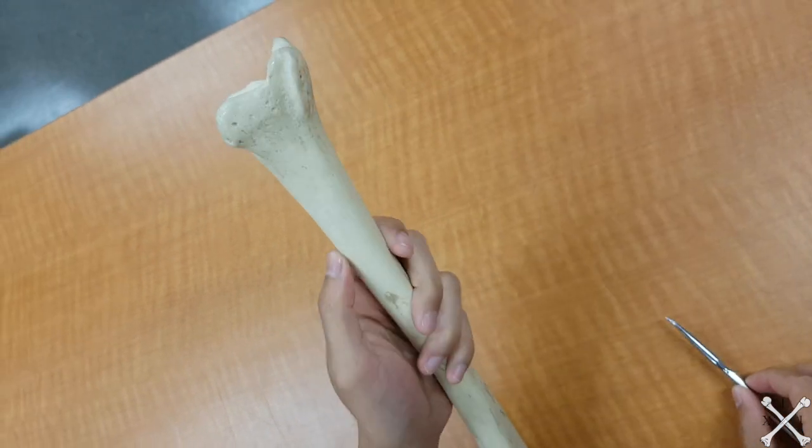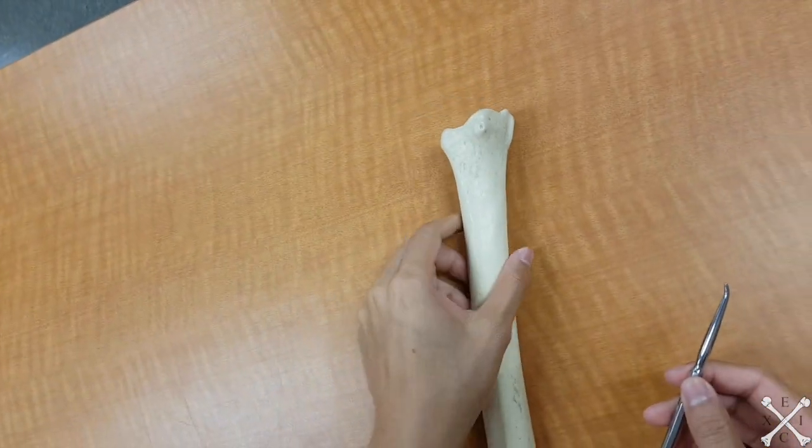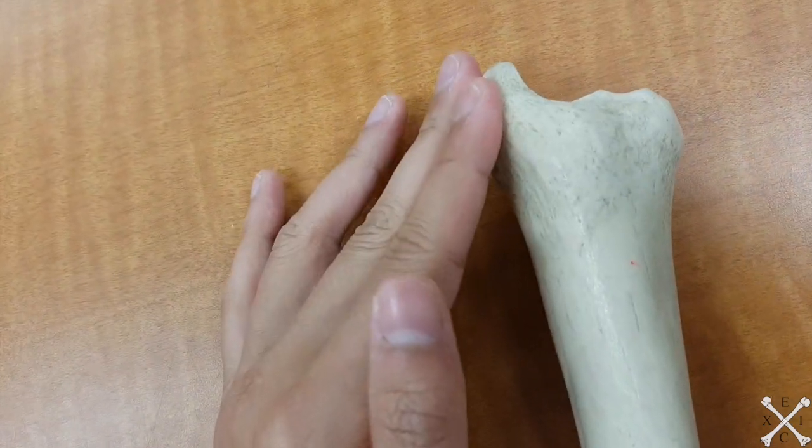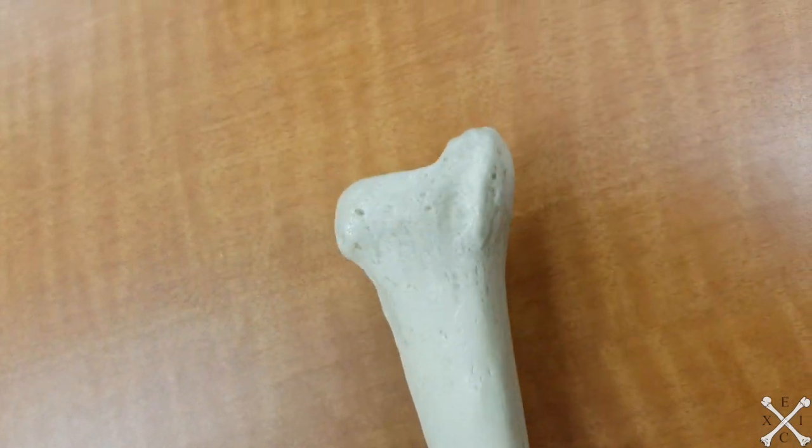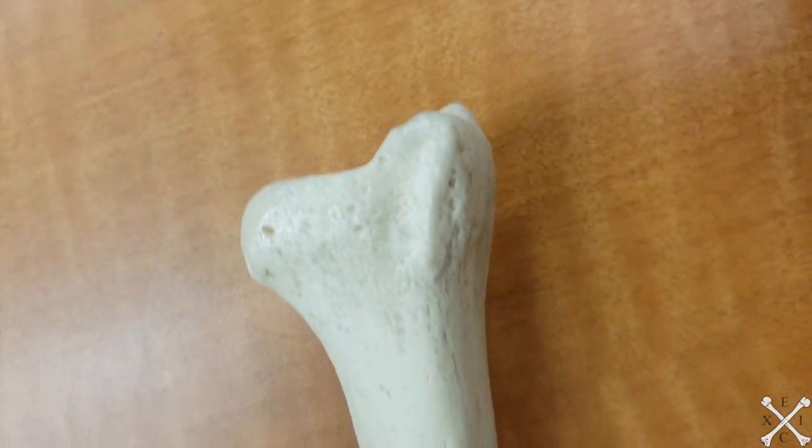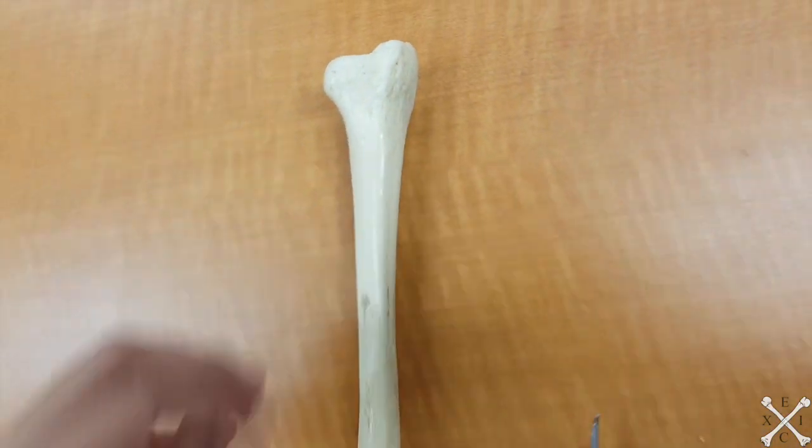And last but not least, looking posteriorly, the malleolar groove. So a trick is: lower your medial malleolus, turn it around, look at it posteriorly. This groove right here, this whole groove right here, that would be your malleolar groove. And that's it for the tibia.